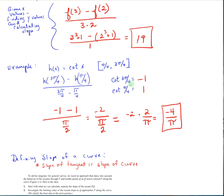Tan of 45 is 1, so cotangent of 45 is also 1, but you have to think about the quadrant you are in. Cotangent of π/4 — you're in quadrant 1, that's a 1. Cotangent of 3π/4 is in the second quadrant, and tan or cotan are negative there, so you have a negative 1. So you've got negative 1 minus 1, giving negative 2 over π/2. Flip that: negative 2 times 2 over π equals negative 4 over π. That is your answer.